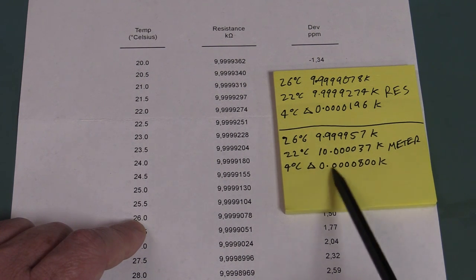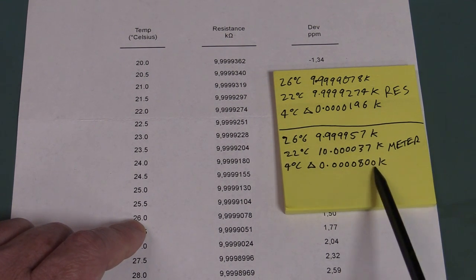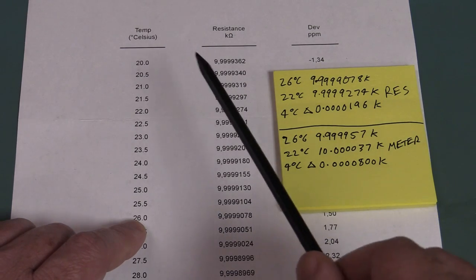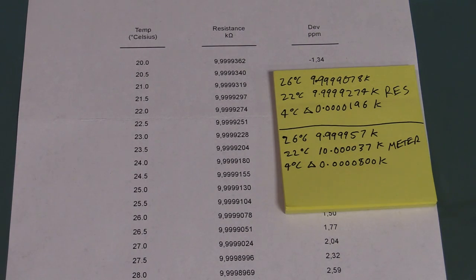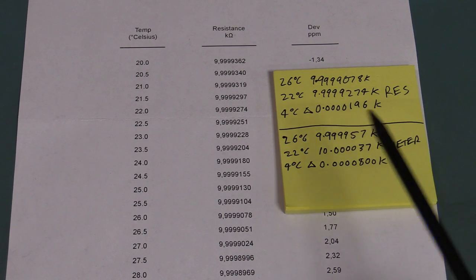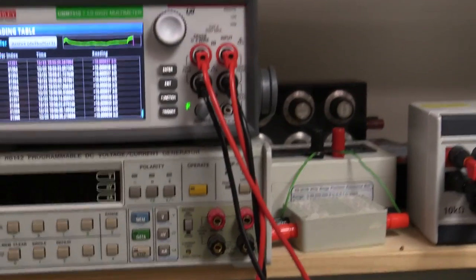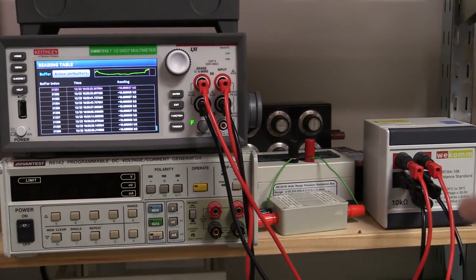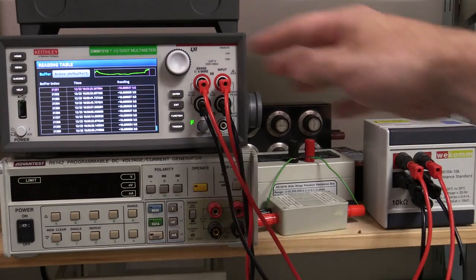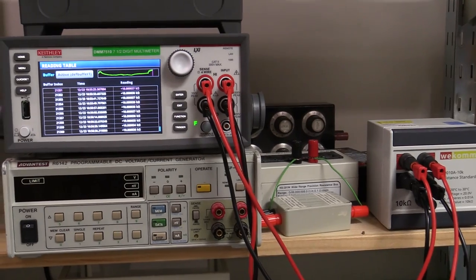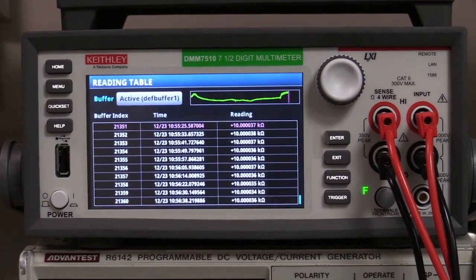So assuming that the resistor is good, which is a pretty safe bet, the rest of that 4 times change must be coming from either the meter or from possibly the interconnects. Of course we could have thermal EMF issues here, maybe with the test leads. These are different metal matching, all that sort of stuff. But it's likely most likely to be the temperature characteristic of the Keithley meter.